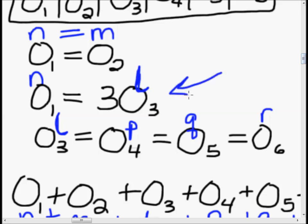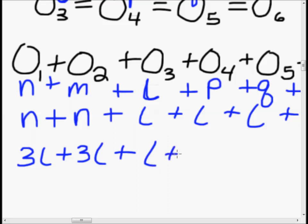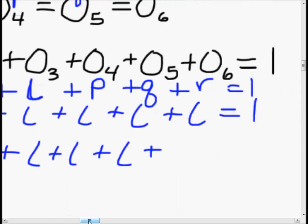Now we use the third relationship: N equals 3L, because outcome 1 is 3 times as likely as outcome 3 (which is L). Substituting that in, we get 3L plus 3L plus L plus L plus L plus L equals 1.